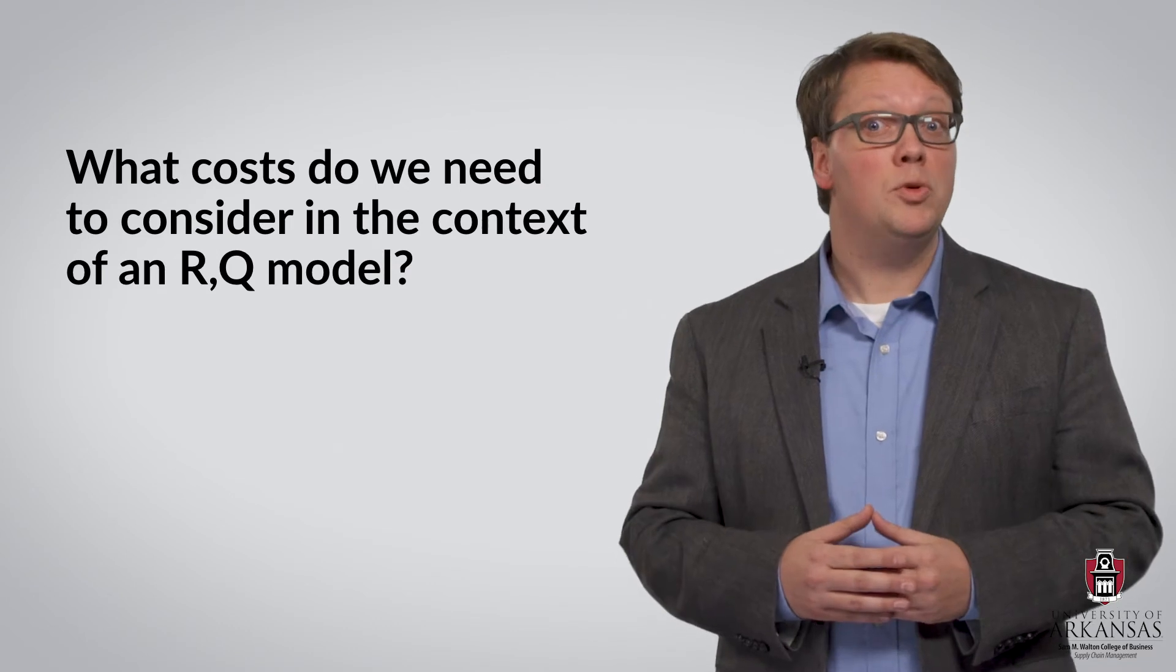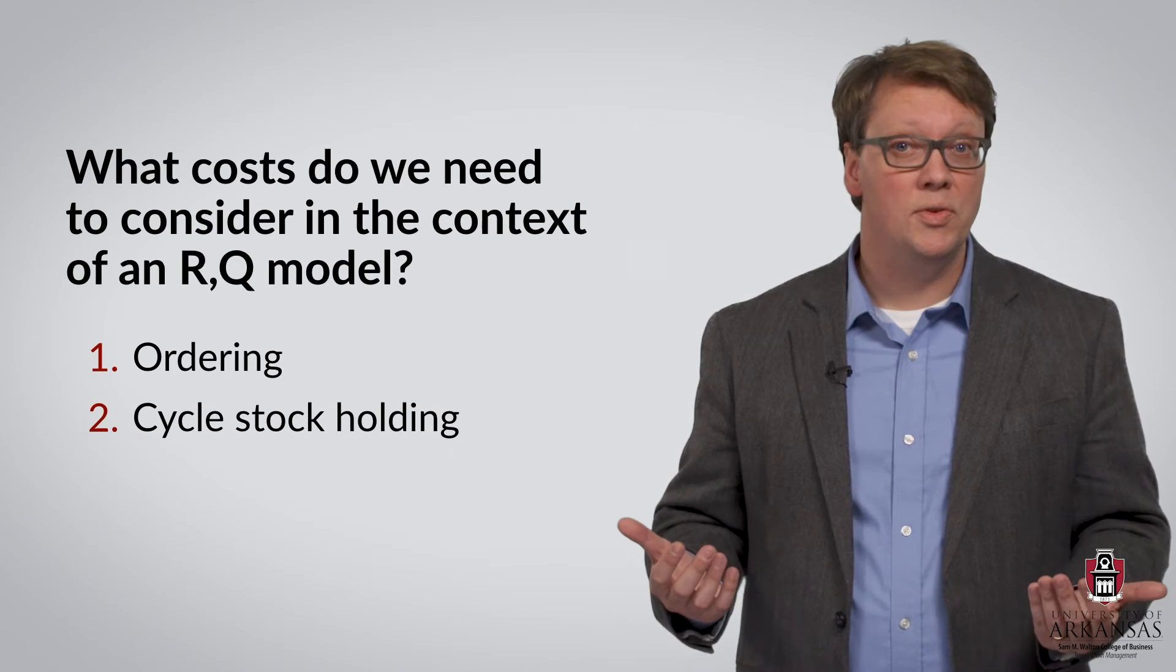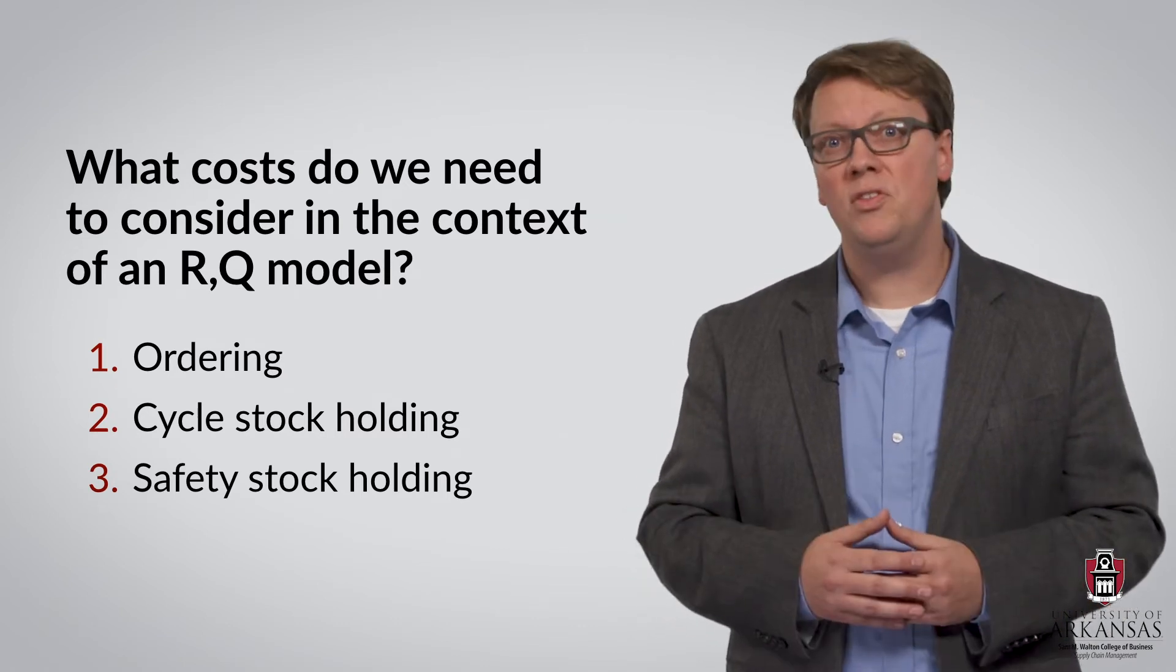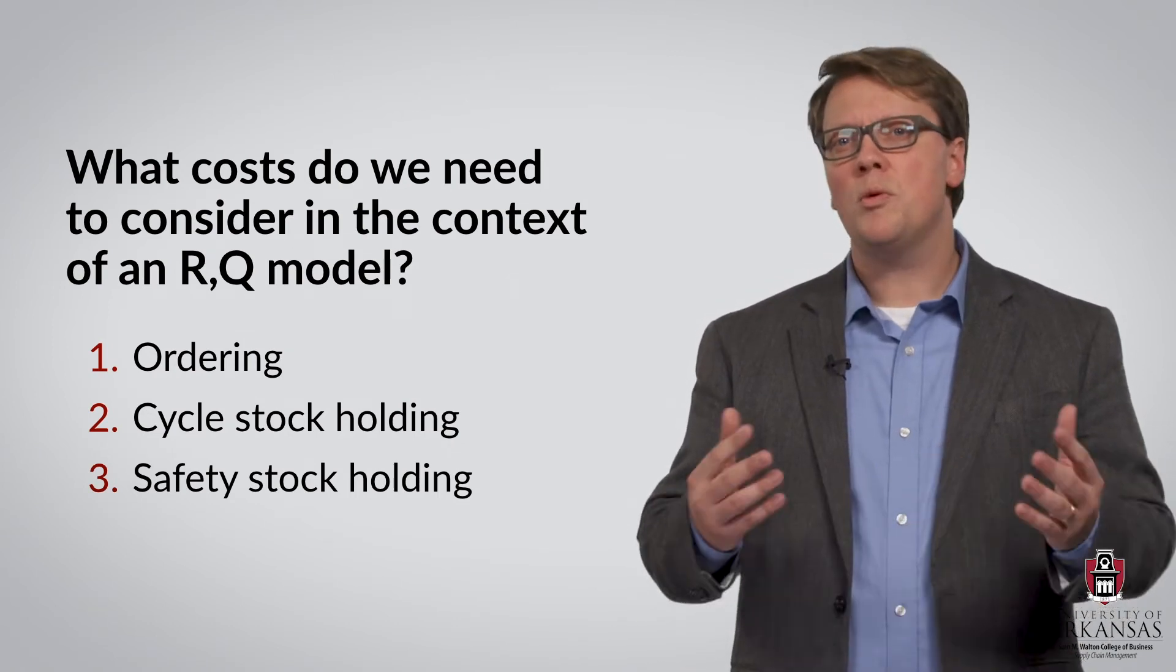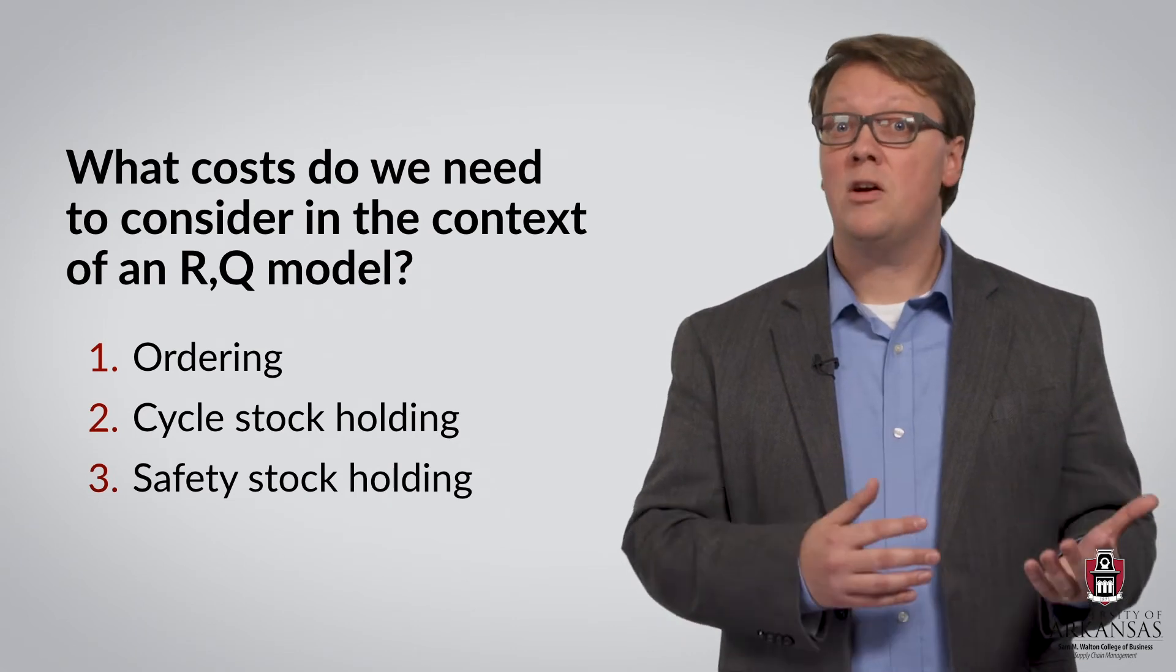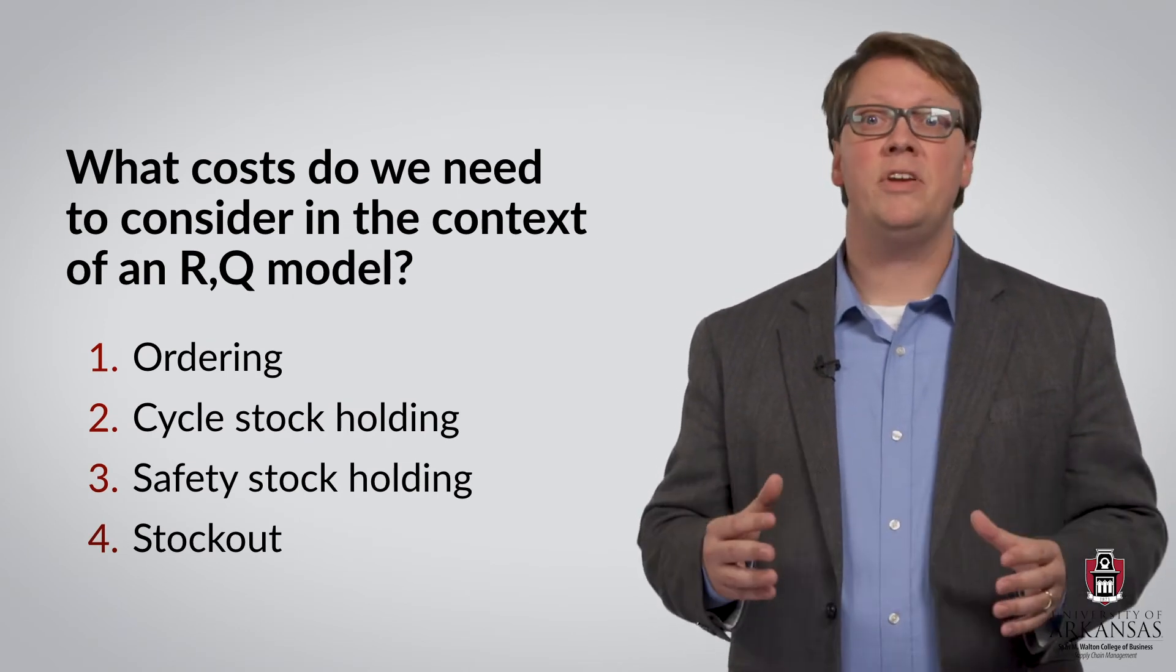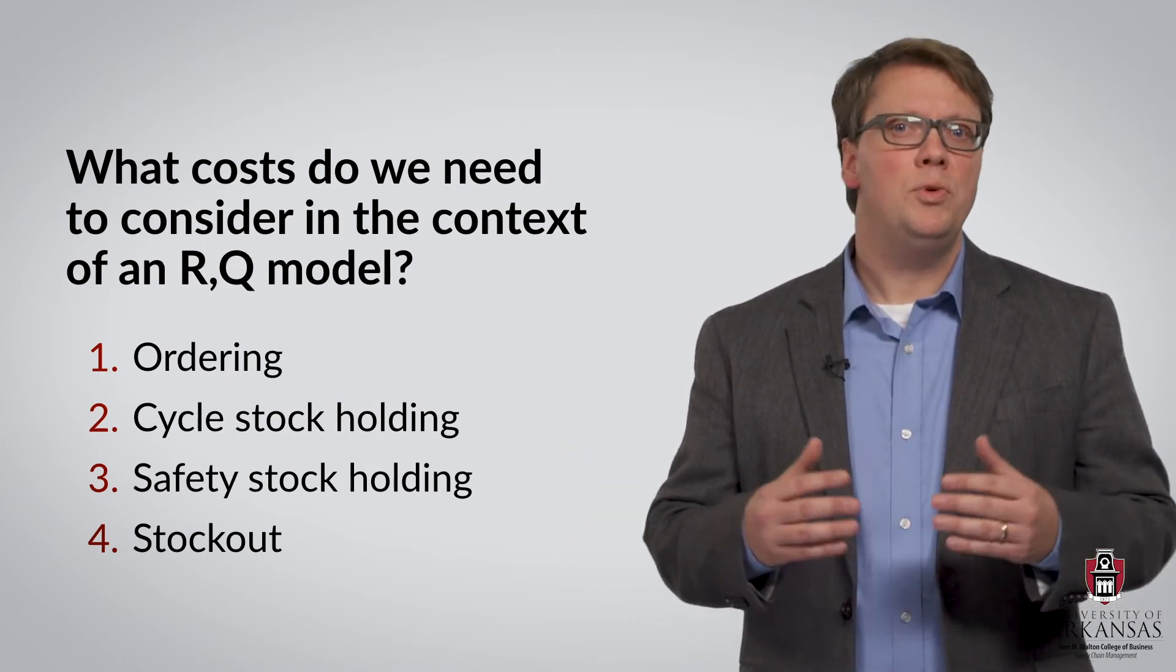What costs do we need to consider and model in the context of an RQ system? Just like in the basic EOQ model, we are concerned with ordering and cycle stock holding costs. But notice that we now also hold safety stocks that serve as a buffer. Hence, we also need to consider safety stock holding costs. We will talk more about safety stocks in just a moment. The fourth and final cost we need to pay attention to is the stock out cost, the amount of money we stand to lose by not having inventory on hand when customer demand occurs.